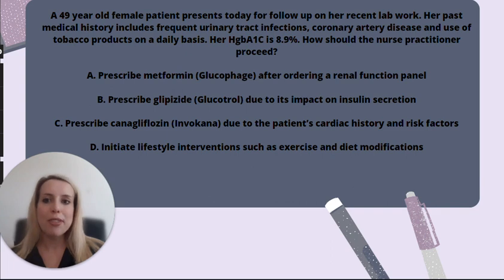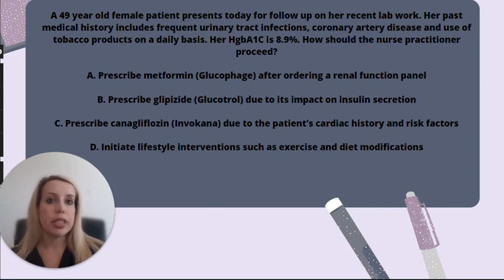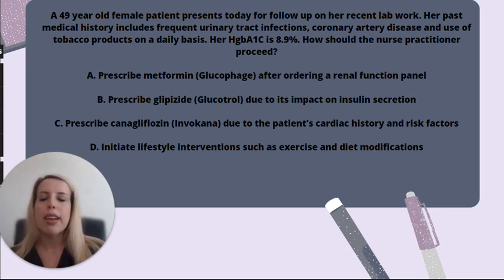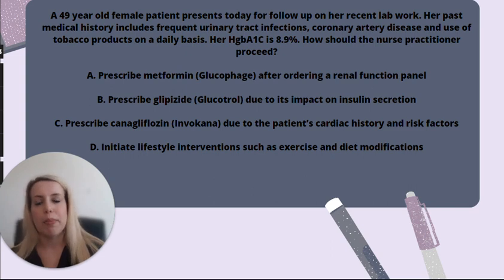We have to know some background information about these drugs to properly answer this question. Immediately, your eyes might jump to answer D — initiate lifestyle interventions — which is absolutely correct; we do need to initiate those. But don't let this throw you off. This patient's hemoglobin A1c is 8.9% — she has diabetes, full-blown, full stop. Lifestyle interventions are not enough to treat our patient, so it's not fully the best answer choice and we can eliminate it.